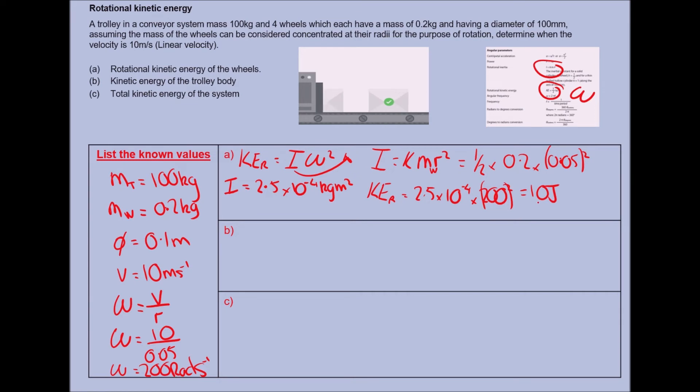I've got rotational kinetic energy equals I, which is 2.5 times 10 to the minus 4, times my angular velocity squared, 200 squared, and that's going to give me a calculation. Pop it in there, that's going to give me 10 joules. Again, energy formulas, go back and check the units on that one.